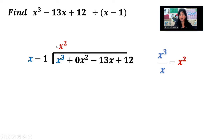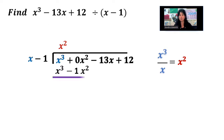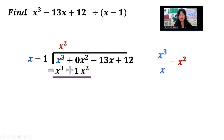You're going to take x squared and multiply it to each term off to the side. So x squared multiplied by x is x cubed. x squared multiplied by negative 1 is minus x squared. We're ready to subtract, so I'm going to draw in a line to subtract. Just don't forget that you need to distribute that negative all the way through.